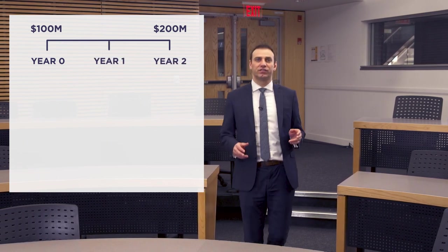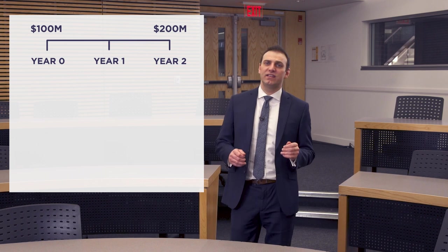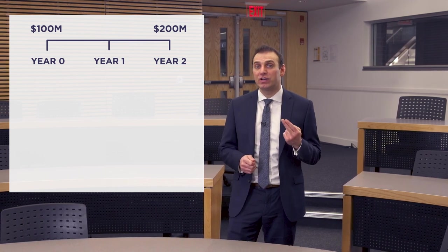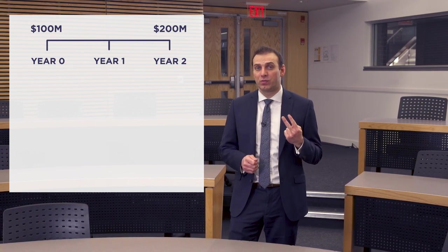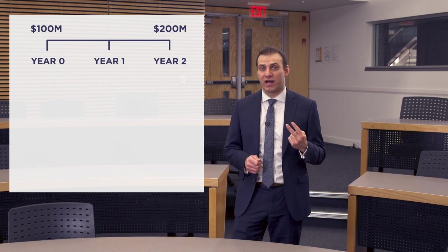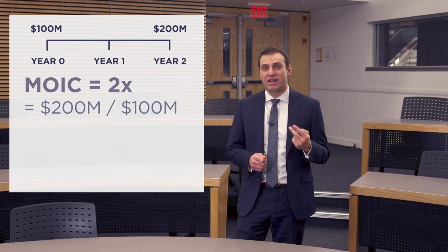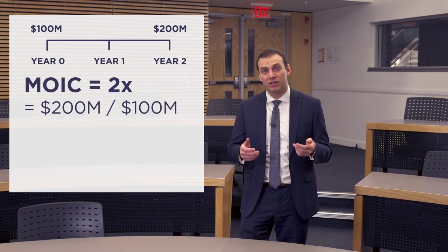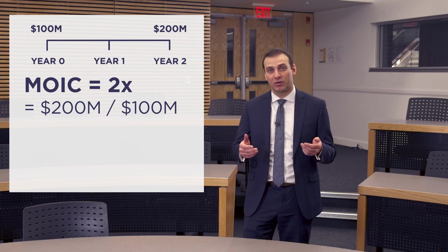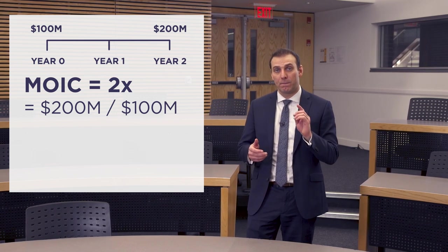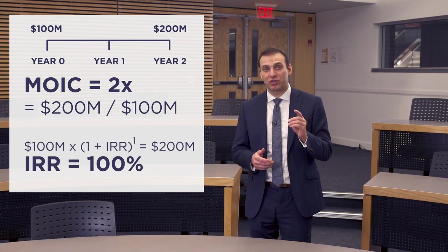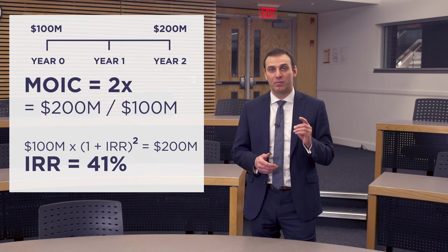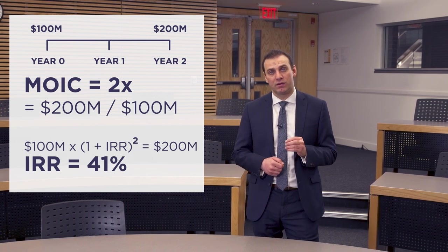Now let's extend the example for two years. So let's say the investor invests $100 million and two years later receives $200 million back. The investor will still have doubled their money, or received the two times multiple on invested capital, but the internal rate of return, IRR, will now be 41%.